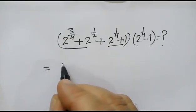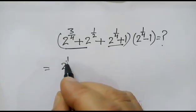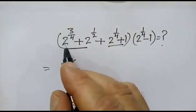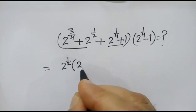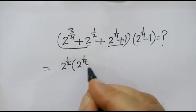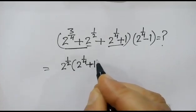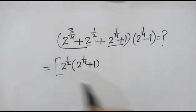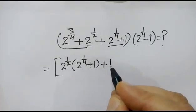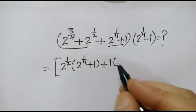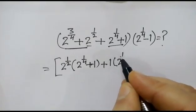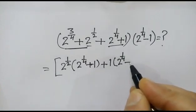So first we will take common as 2 to the power 1 by 2 (or half). So here what will remain is 2 to the power 1 by 4, plus 1. Now we will take 1 as common, so here we will have remaining 2 to the power 1 by 4 plus 1.